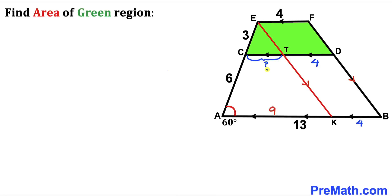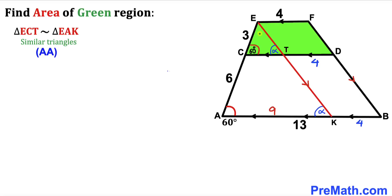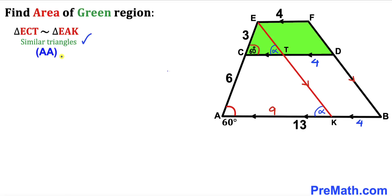Since angle BAC is 60 degrees, the corresponding angle at T is also 60 degrees. If the other angle is alpha, the corresponding angle is also alpha. These are corresponding angles and are congruent. Therefore, triangle ECT and triangle EAK are similar triangles by the Angle-Angle similarity theorem, since all three corresponding angles are congruent.